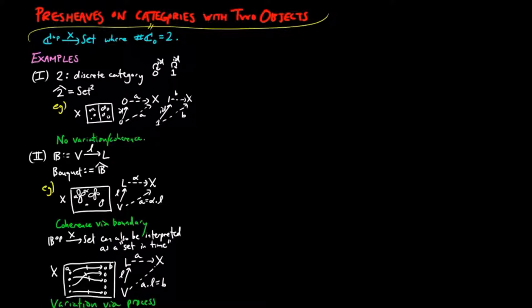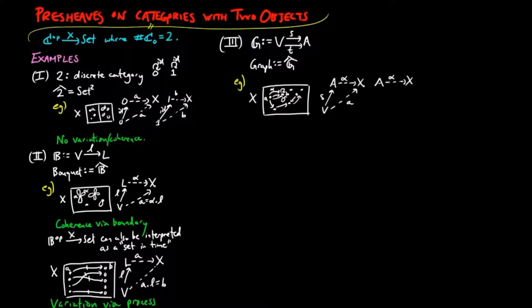The third example is the category of graphs, which is the category of pre-sheaves on G, which has two objects and two morphisms between them. A container X then has arc figures and vertex figures, such that given an arc figure alpha, there is a source vertex A and a target vertex B associated to it.